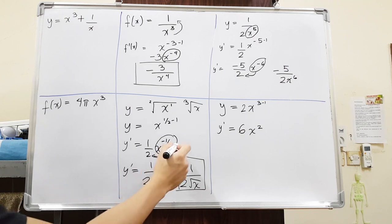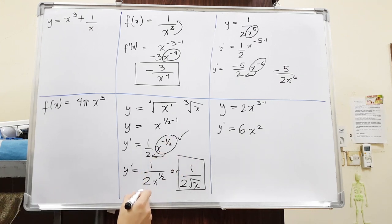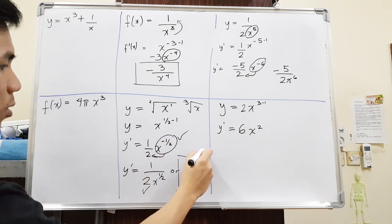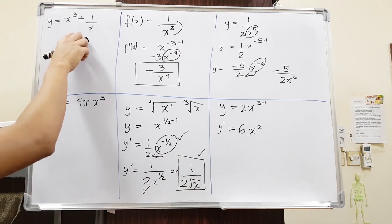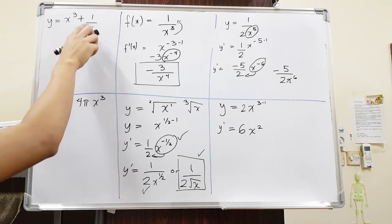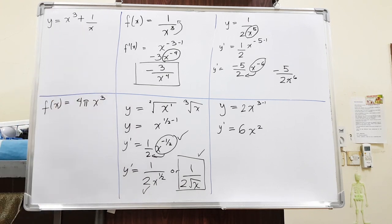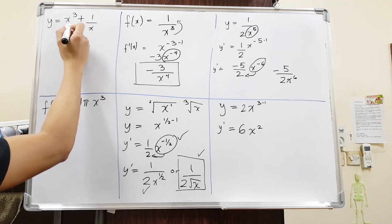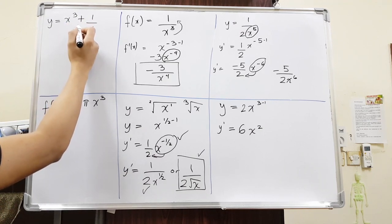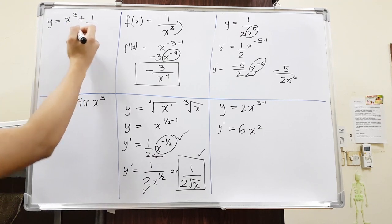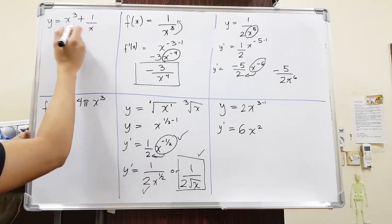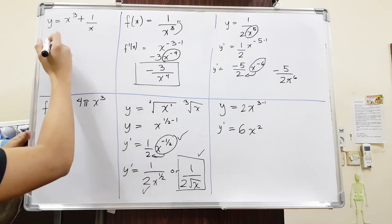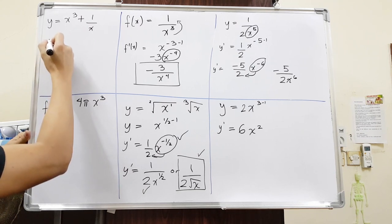All three forms are acceptable answers — it depends on what format the teacher wants. Now, if we have two variables, we can differentiate them individually, but only if the sign between them is plus or minus. If it's multiplication, there's a different rule for that. For now, if the sign in the middle is plus or minus, we can just differentiate them individually.